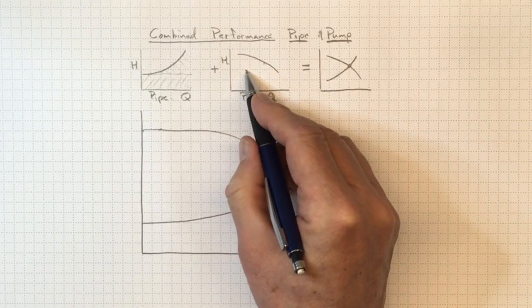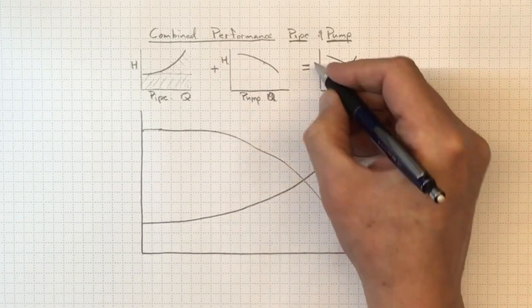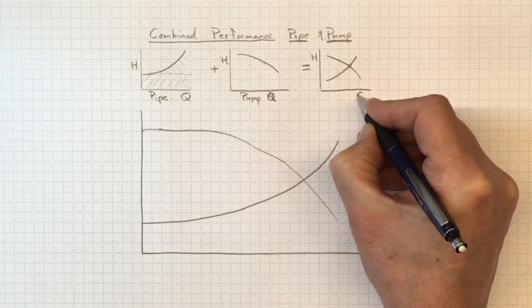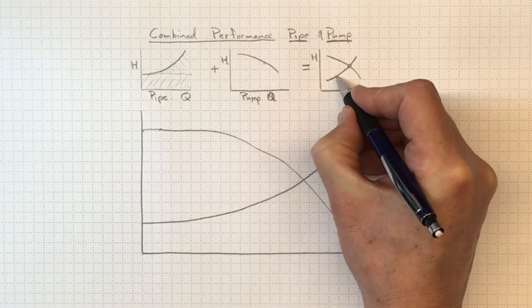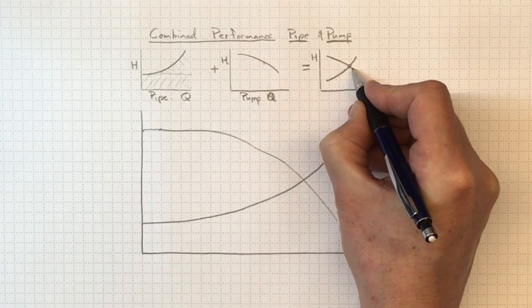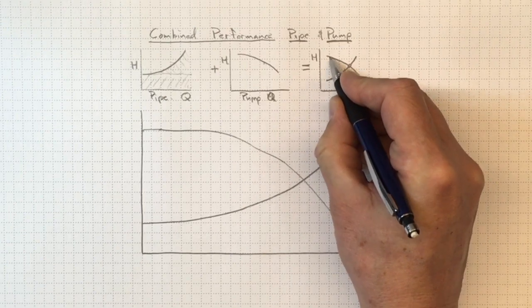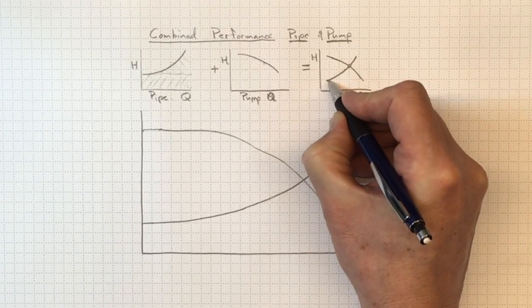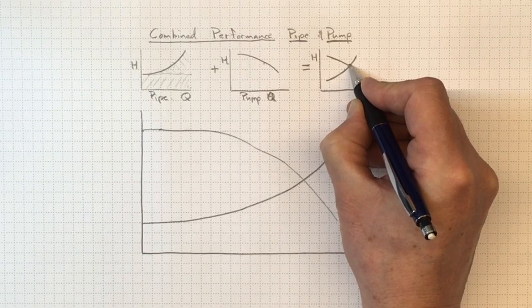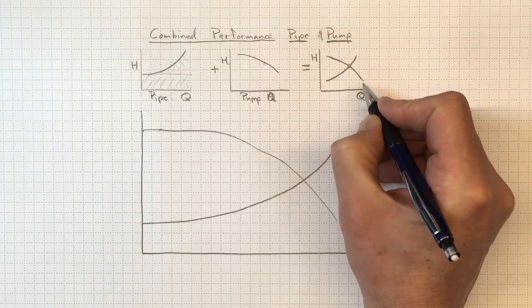And the two of them combined together, we can put on the same axes and find the intersection point between these two curves. If this is what the pump can do and this is what the piping requires, then where those two lines cross is the point where things will actually operate.